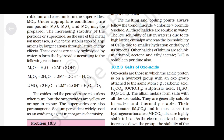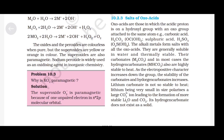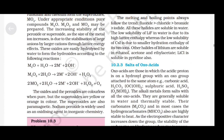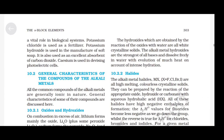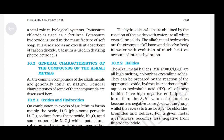The oxides and peroxides are colorless when pure. Why is K₂O₂ paramagnetic? The superoxide O₂⁻ is paramagnetic because of one unpaired electron in π*2p molecular orbital. The hydroxides obtained by reaction of oxides with water are all white crystalline solids. The alkali metal hydroxides are the strongest of all bases and dissolve freely in water with evolution of much heat on account of intense hydration.